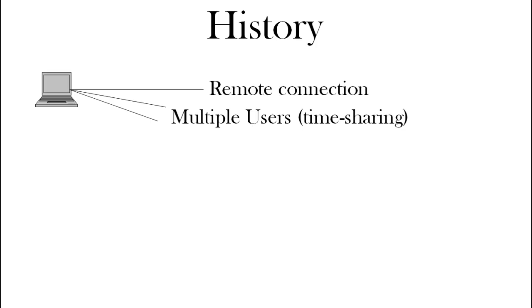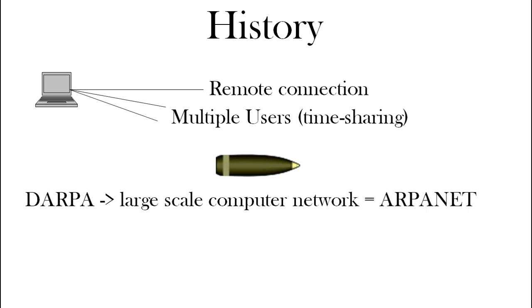History: when computers first started, they got quite big and quite hot, so they were put in a special room to keep them cool. People had to devise a way to connect to these computers from outside the room — a remote connection. After a while, it seemed better for more than one person to use a computer at the same time, called timesharing. In the late 50s and early 60s, there were concerns over missile crises, and in America they set up DARPA, which had a plan to build a large-scale computer network called ARPANET.